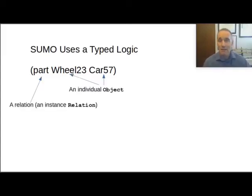And we know that's allowed in SUMO because we have a relation part and this relation is itself an instance of the class of all relations. So that means it belongs in the relation position, the zeroth argument. And it has two arguments, which are individuals, instances of the class object. So a wheel, a particular wheel is an object and a car, a particular car is also an object.